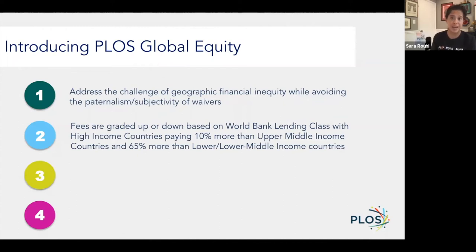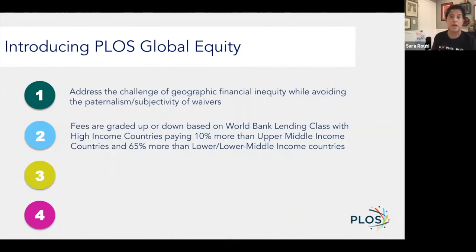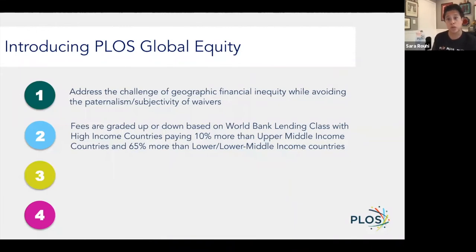The institutions that are in high-income countries, as defined by the World Bank Lending Classification System, pay the highest fees. Institutions from upper-middle-income countries pay lower fees. And institutions from lower- and lower-middle-income countries pay the lowest set of fees. If you are in an institution that is in a Research for Life country, those fees are completely waived — institutions don't have to join and authors do not have to ask for waivers.